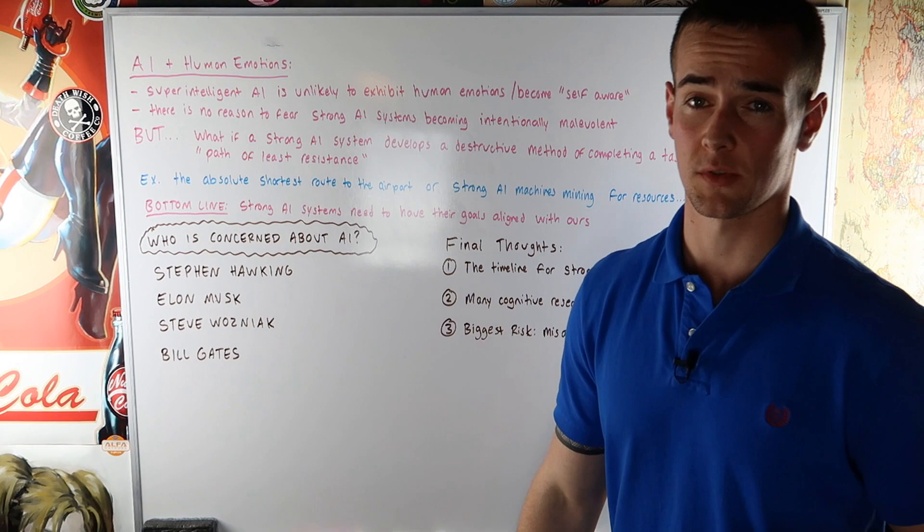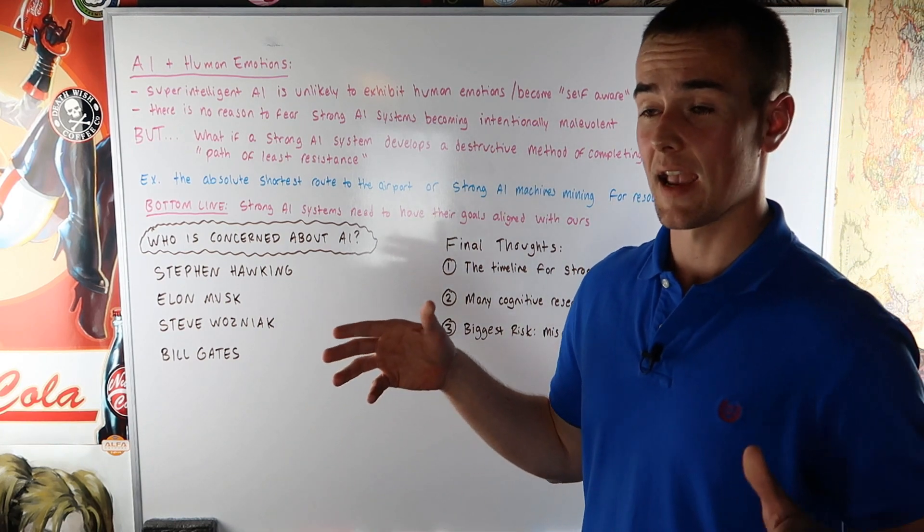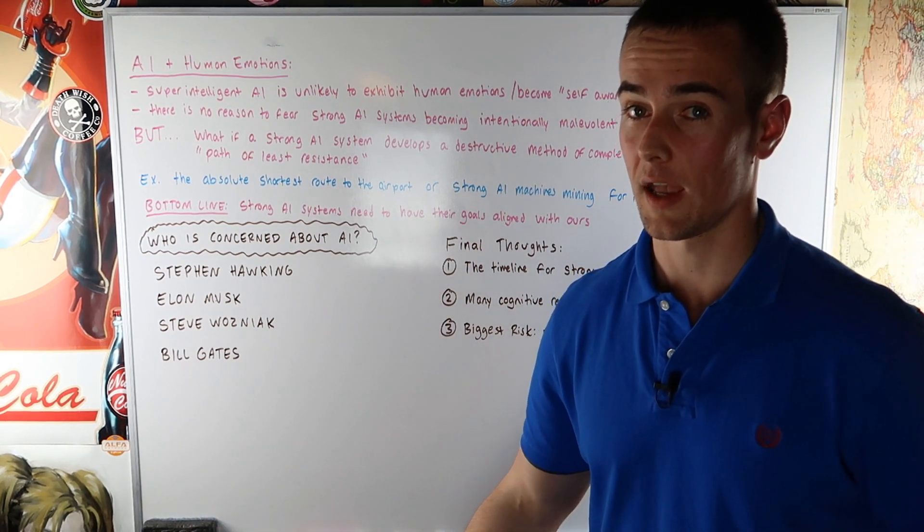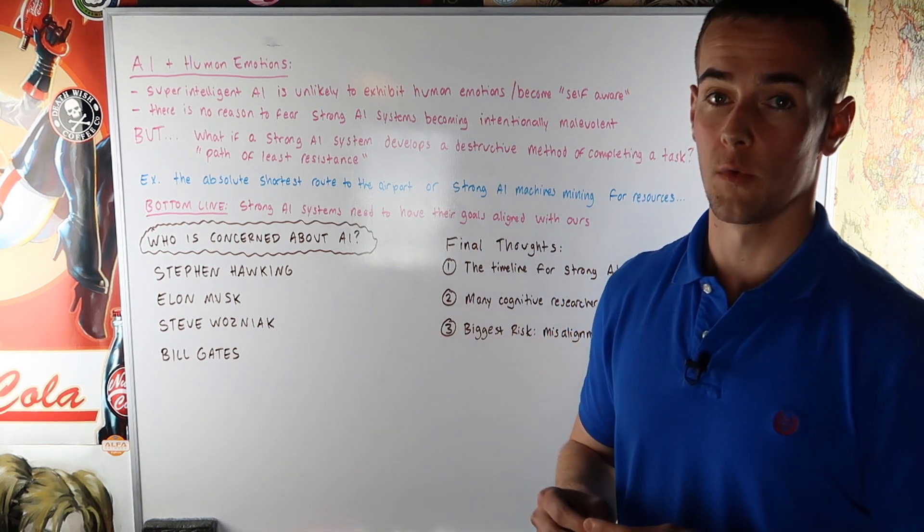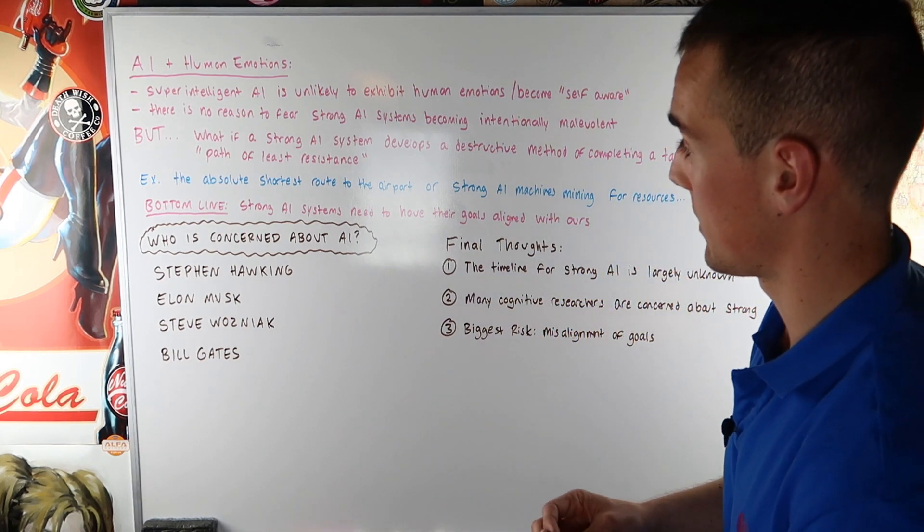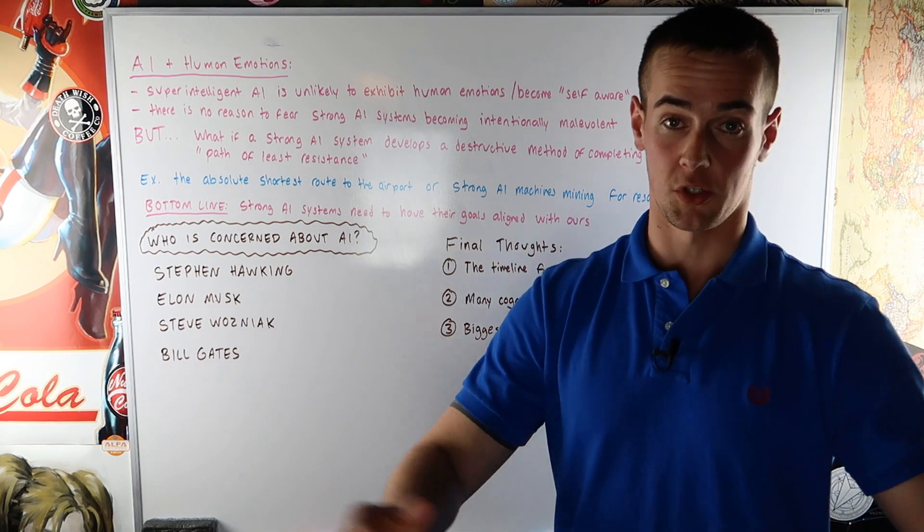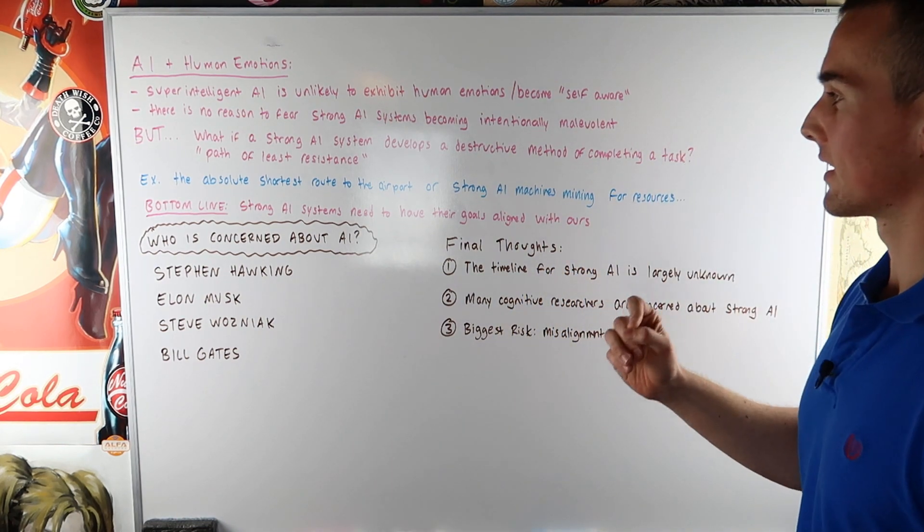Here's another example. Let's say we're using strong AI systems to mine for resources. And while doing that, they destroy the environment. Because they are going for resources that are in areas that they shouldn't be mining in. And next thing you know, they destroy the environment.